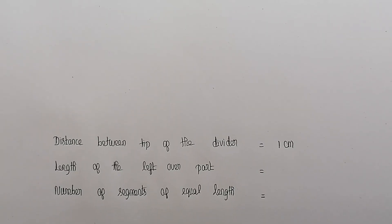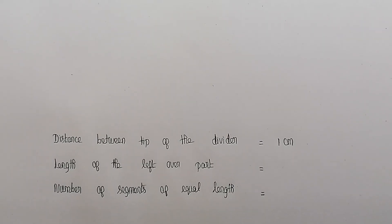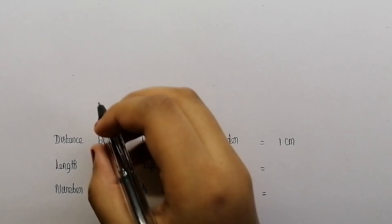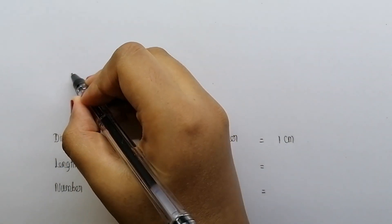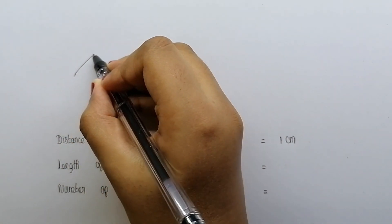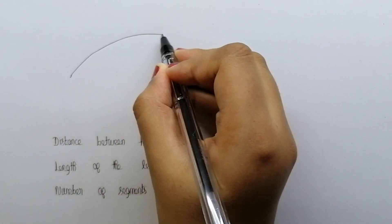In the previous video we saw about the thread method. In this video we are going to see about the divider method. Now we are going to measure the length of a curved line using the divider method.